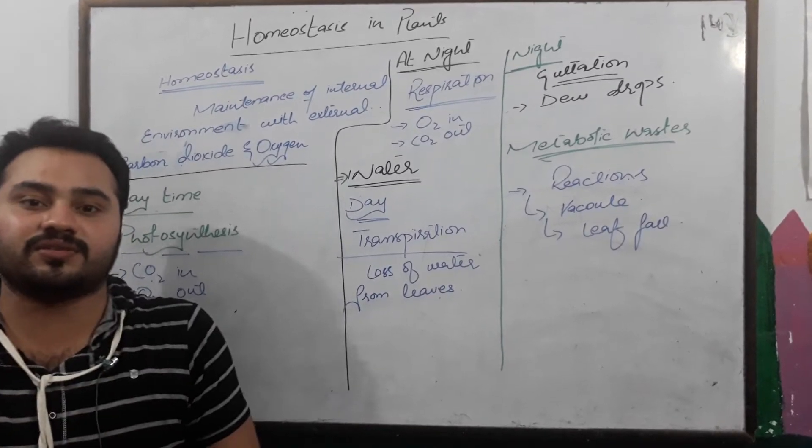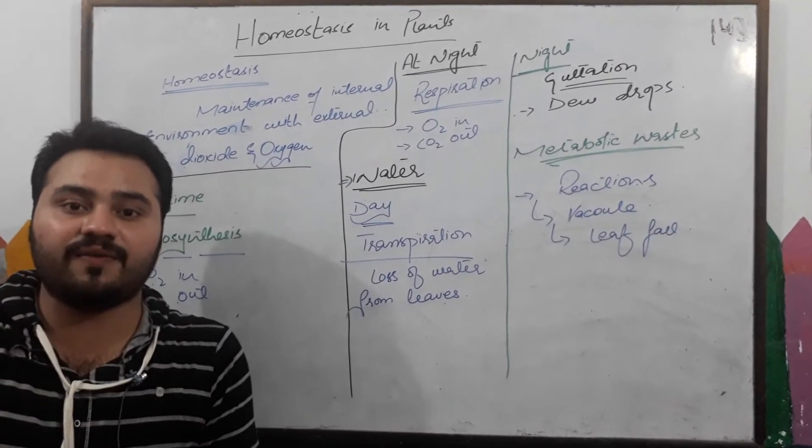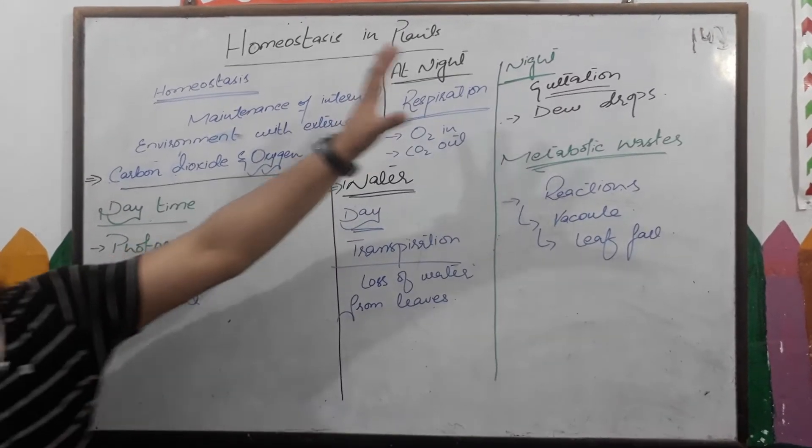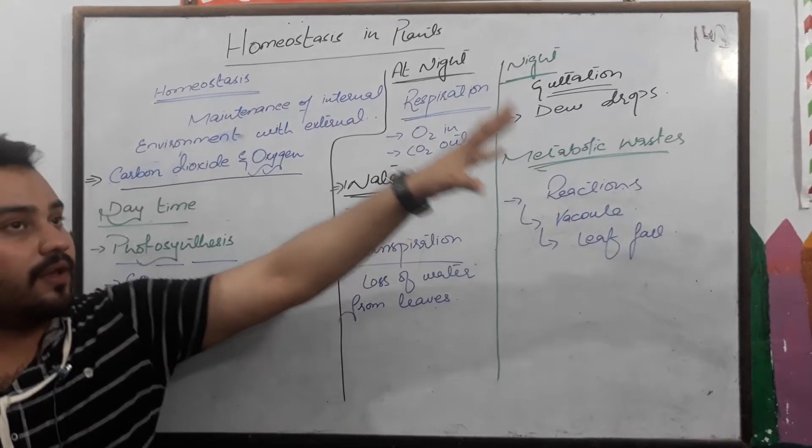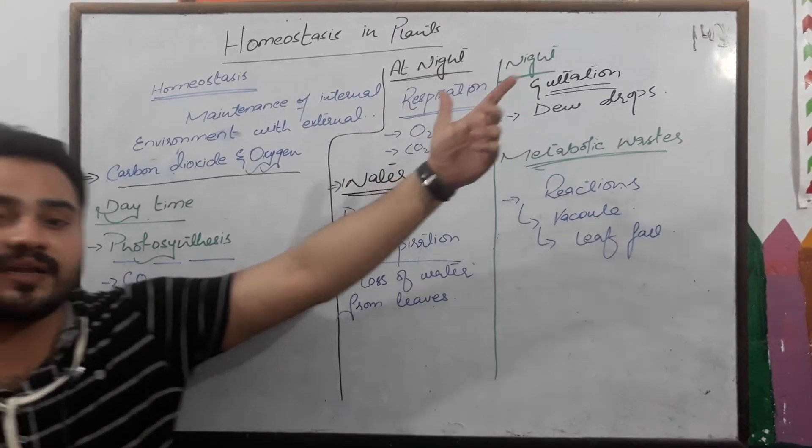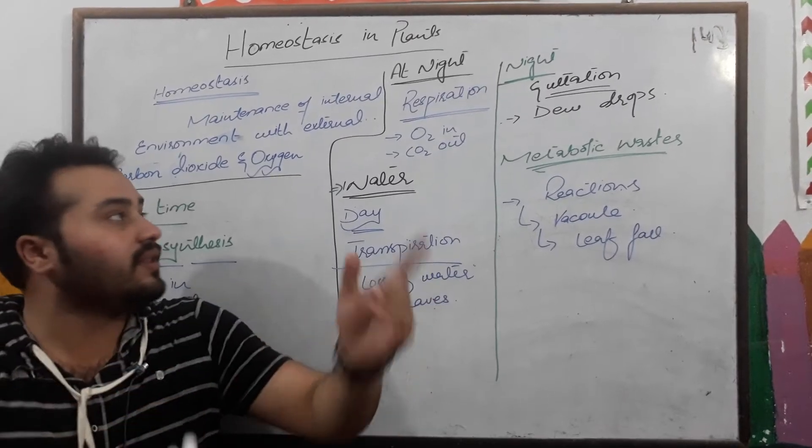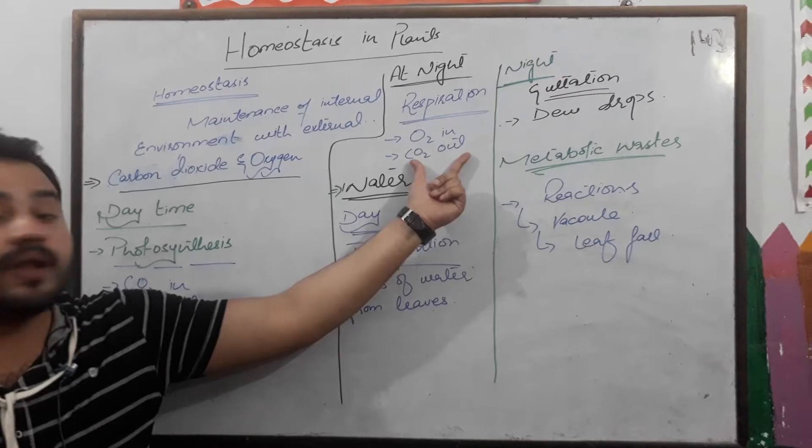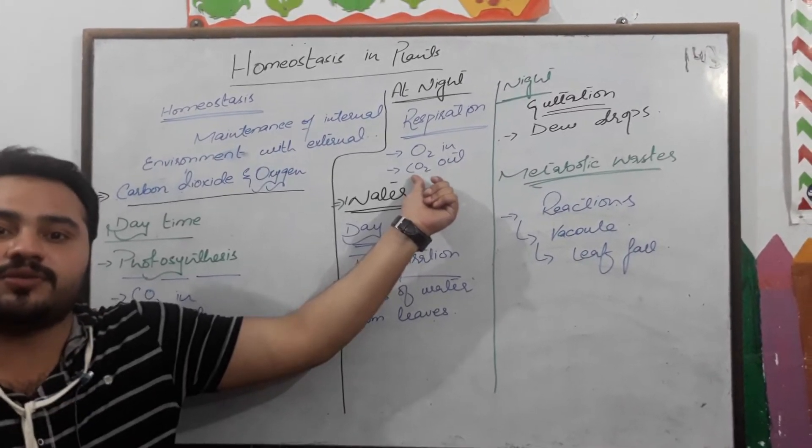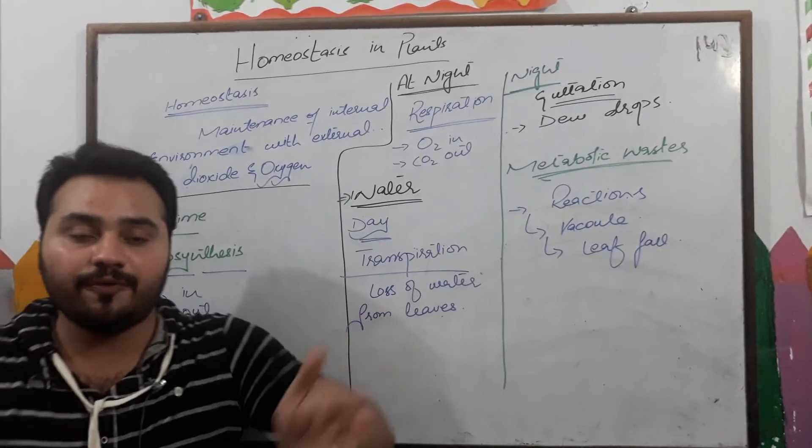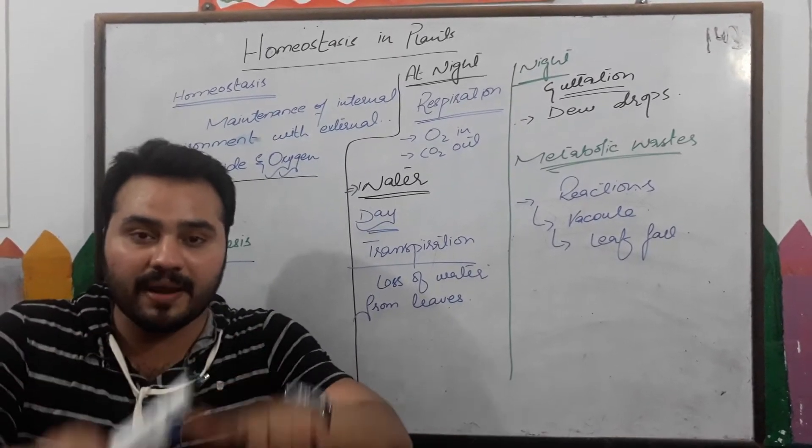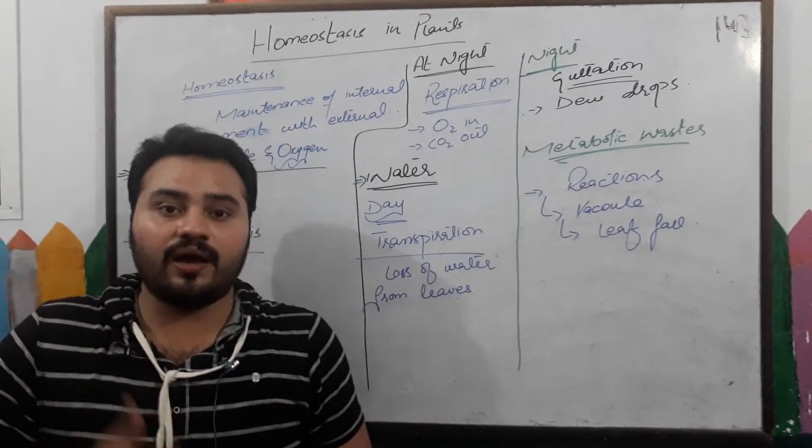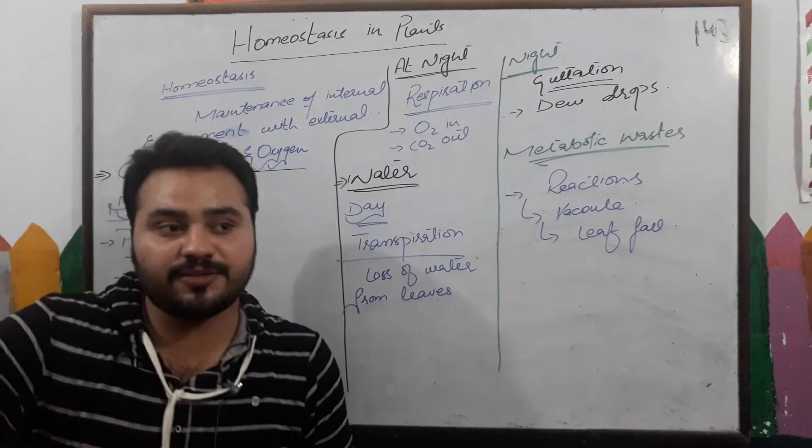This is homeostasis - maintaining the internal environment with the external. At night, plants are doing respiration only. What is respiration? Plants are taking oxygen from the environment and in return giving carbon dioxide. So carbon dioxide is expelled out from the internal environment to external for balancing, for maintenance. This is homeostasis - that one thing which is in higher quantity inside the body is expelled out.